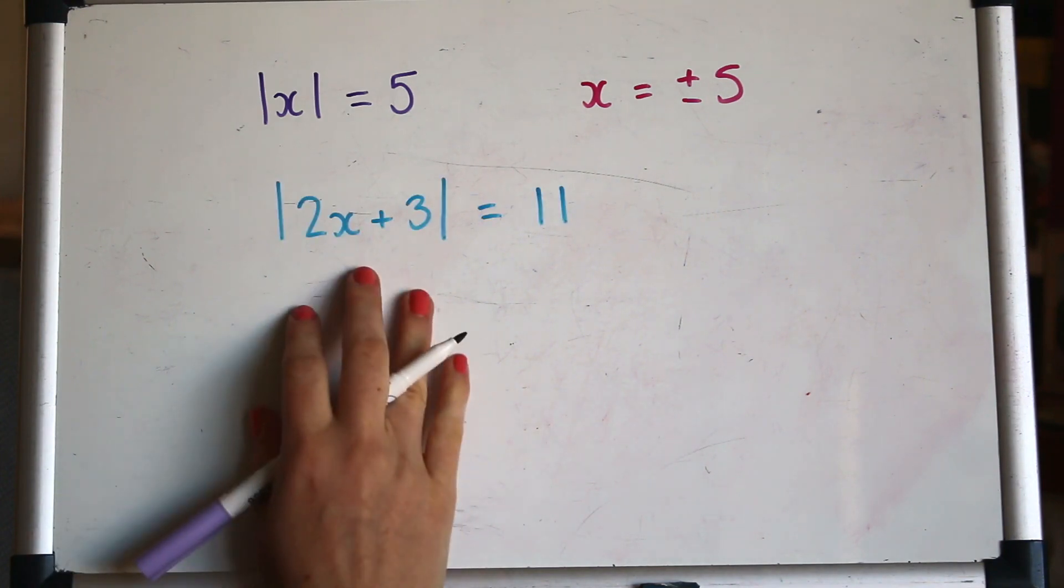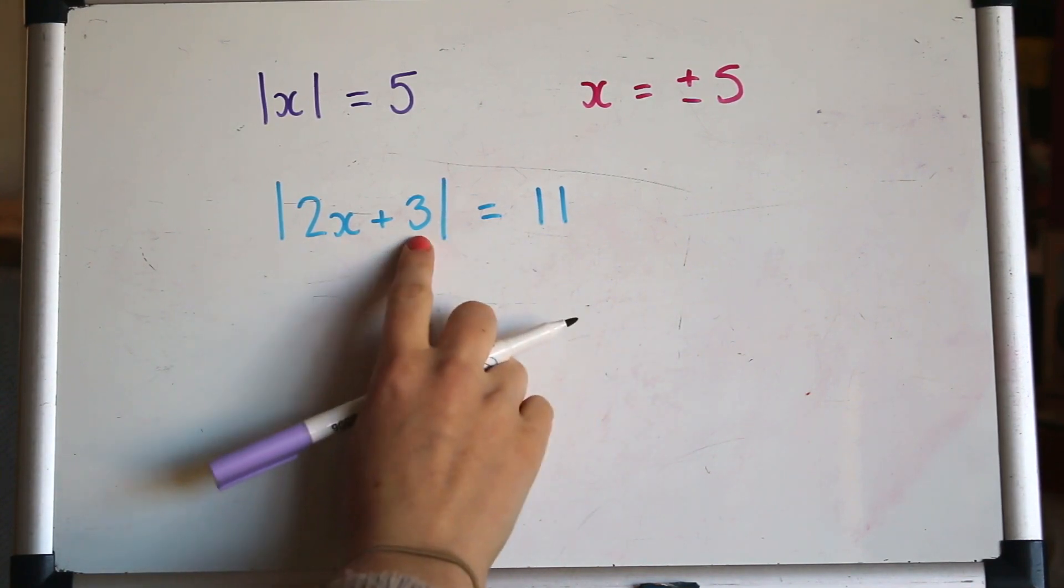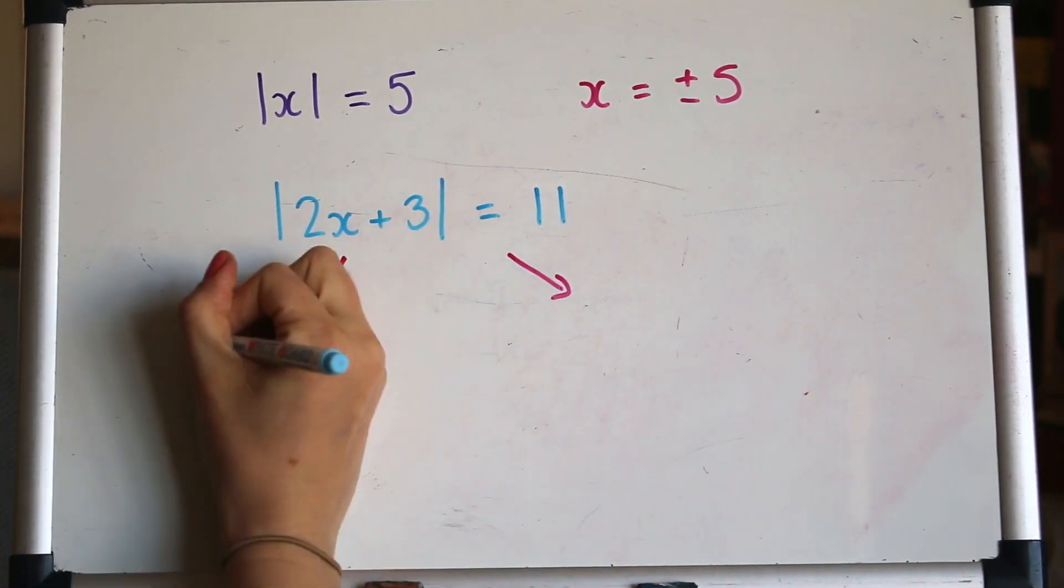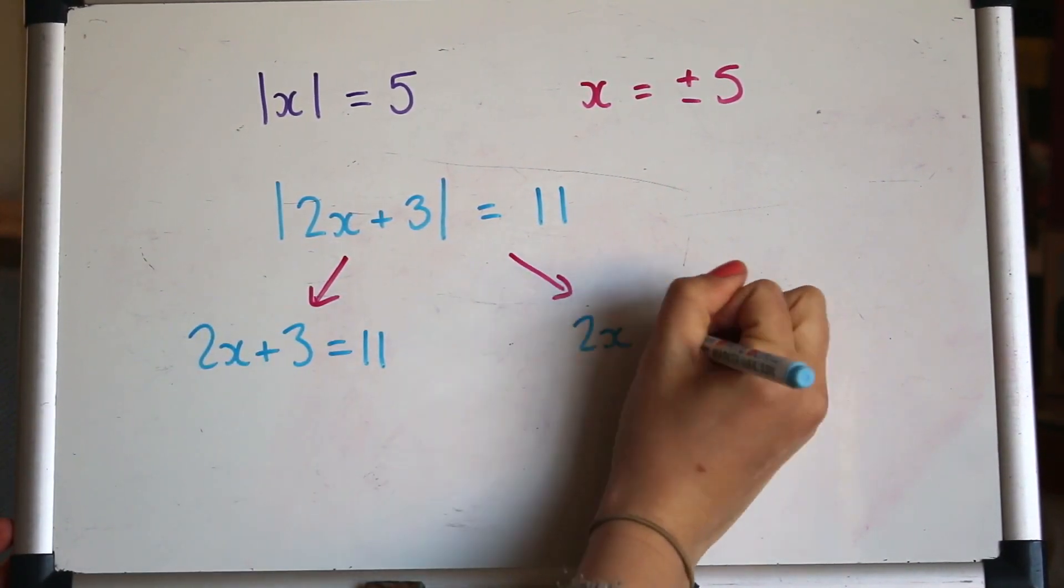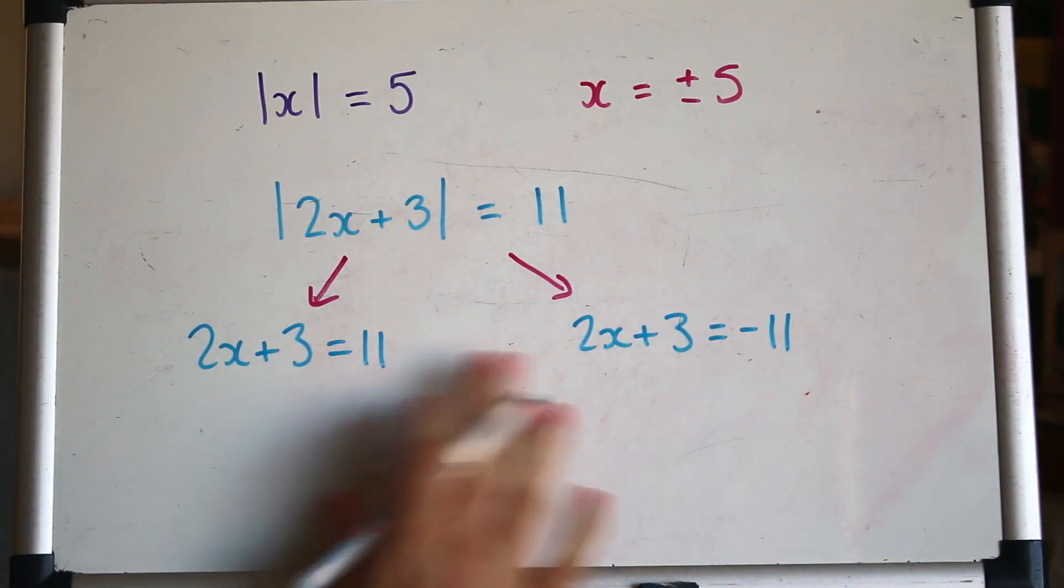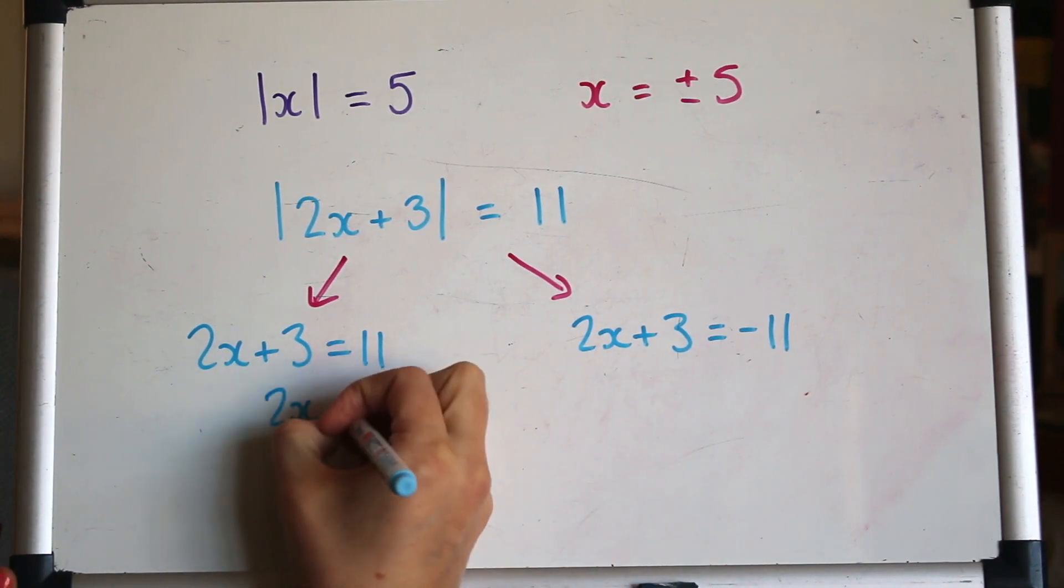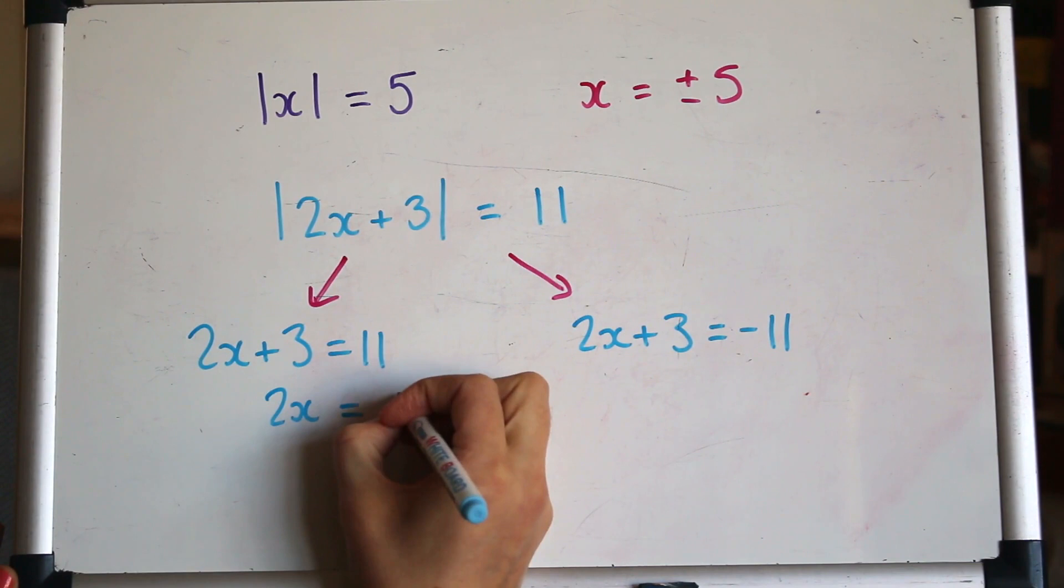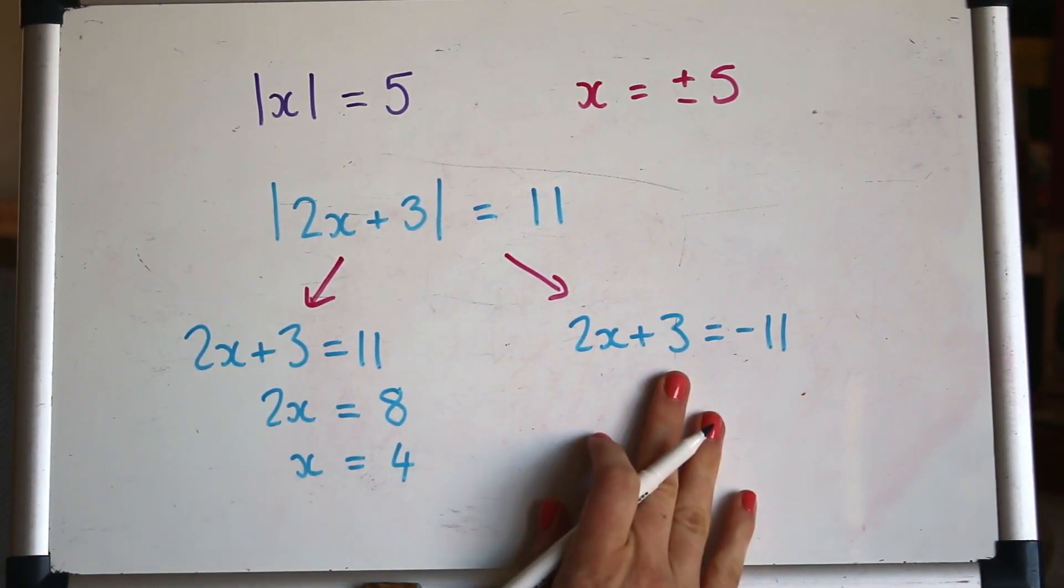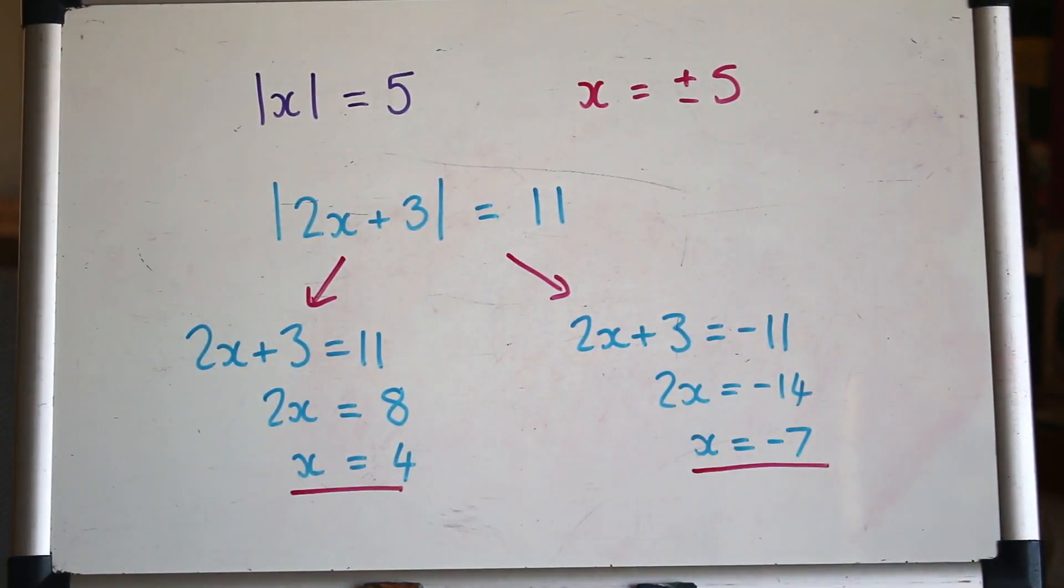So if you've got an equation such as this, the modulus of 2x plus 3 is 11, what that means is 2x plus 3 could be positive 11 or negative 11. So to solve that equation you've got two options and it's good to consider them separately. If 2x plus 3 is positive 11, then we can solve it to get x is 4, and we also need to consider the negative case.